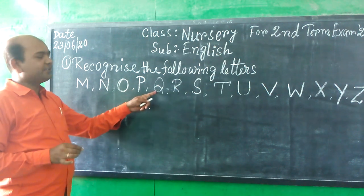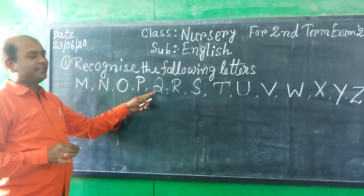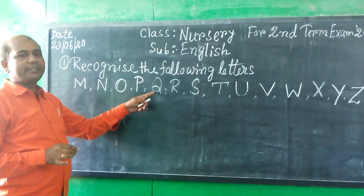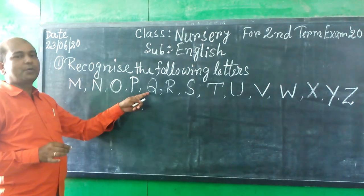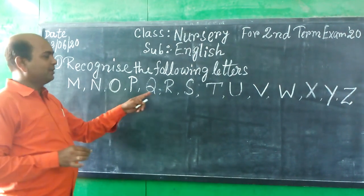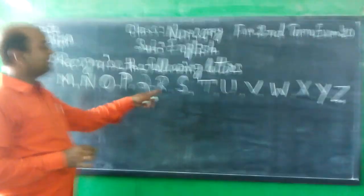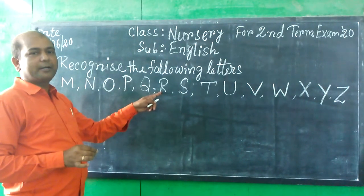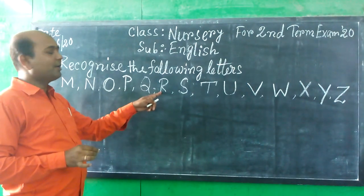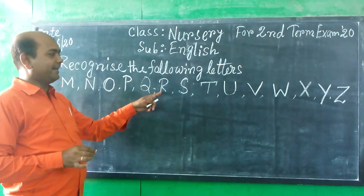What is it? It is Q. Q for Queen. What is it? It is called R. R for Rat.